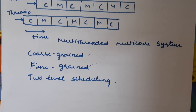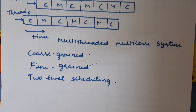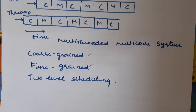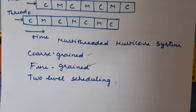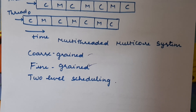In a multi-core processor system, there is two-level scheduling. At the first level, we need to decide which process has to be executed on which logical processor. At the second level, the scheduling decision specifies which core — which processor — should run first. So two-level scheduling takes place in a multi-core processor system. That is all about the multi-core processor system.